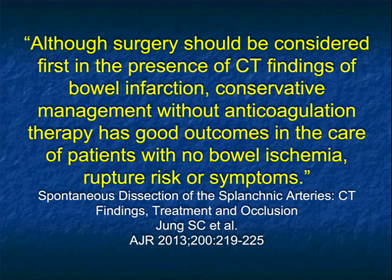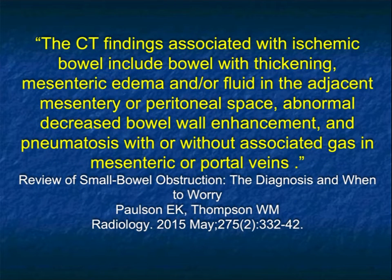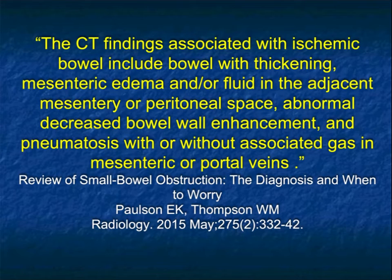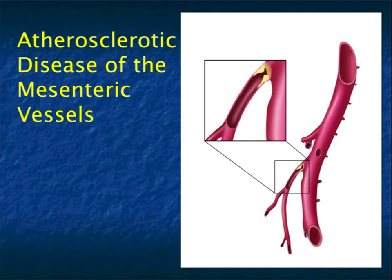The mortality rate in patients going to surgery for small bowel obstruction with ischemic bowel is as high as 25%, compared with those without strangulation where it's as low as 2%. When you have bowel infarction you really need CT, and if CT has a finding you need to go to the OR — patients who are not aggressively managed have a very poor outcome. CT findings associated with ischemic bowel include bowel wall thickening, mesenteric edema, abnormal decreased bowel enhancement, and pneumatosis with or without gas in mesenteric or portal veins.